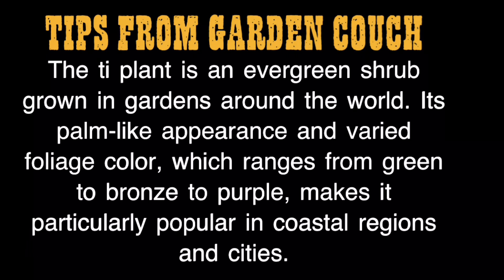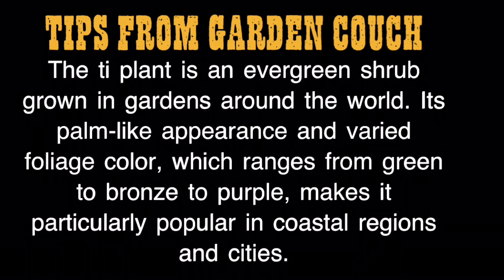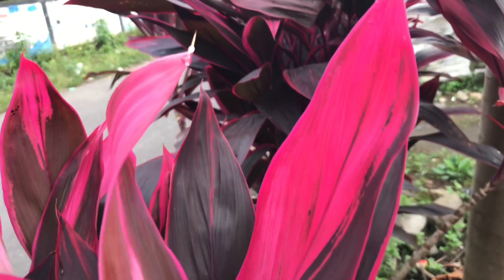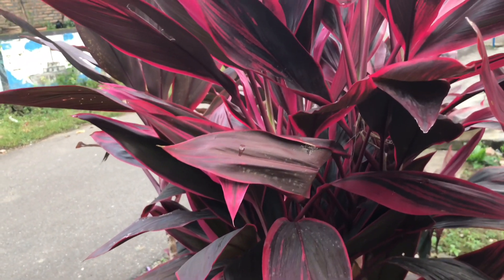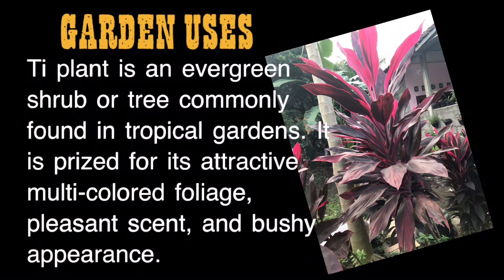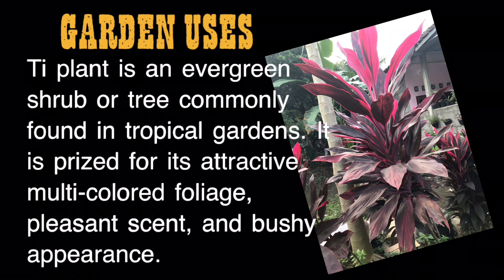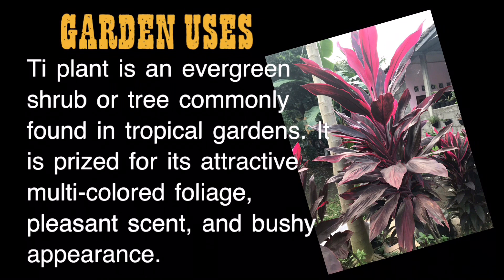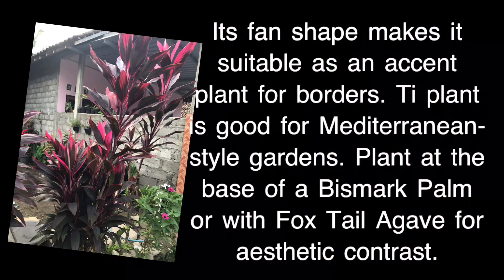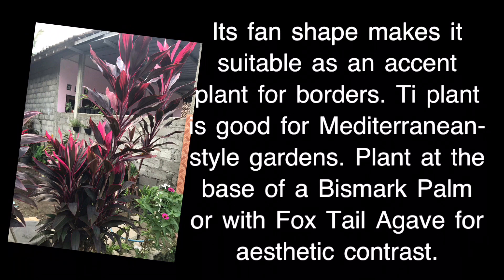Tips from garden coaches: The Ti plant is an evergreen shrub grown in gardens around the world. Its palm-like appearance and varied foliage color — ranging from green to bronze to purple — makes it particularly popular in coastal regions and cities. It is prized for its attractive multicolored foliage, pleasant scent, and bushy appearance. Its fan shape makes it suitable as an accent plant for borders, and it works well in Mediterranean-style gardens — for example, planted at the base of a Bismarck palm or with foxtail agave for aesthetic contrast.